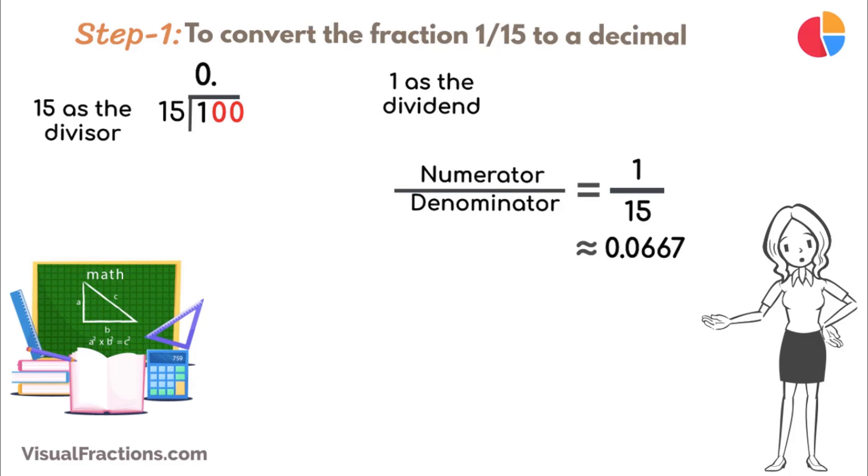Bring down another 0 to make it 100. 15 goes into 10 6 times, putting 0.06 in our quotient. Multiply 15 by 6 to get 90, and subtract this from 100, leaving a remainder of 10.